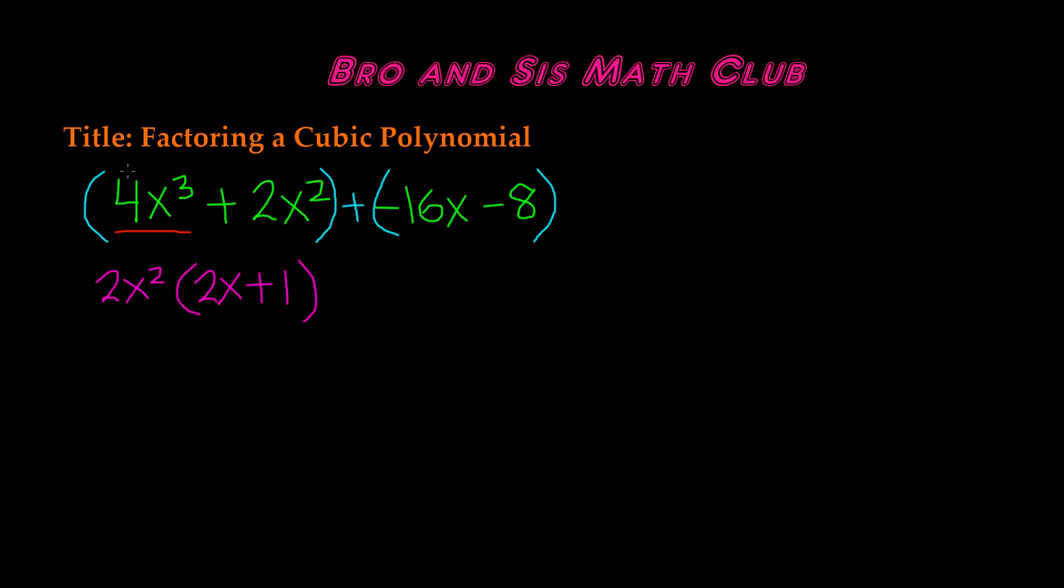And then we have the plus sign over here. So now we have to find the GCF of -16x and -8. And we know that the GCF of -16x and -8 is going to be -8. So -8 times the positive 1 here,